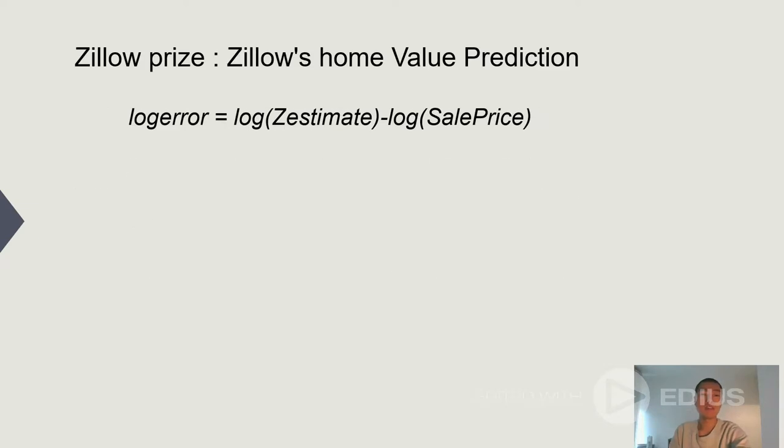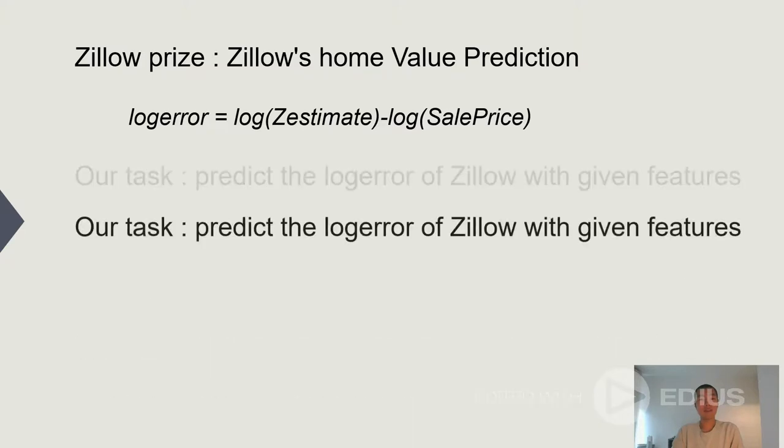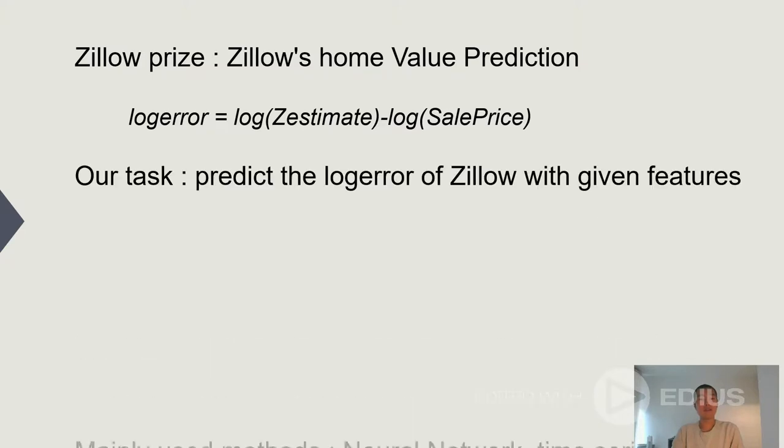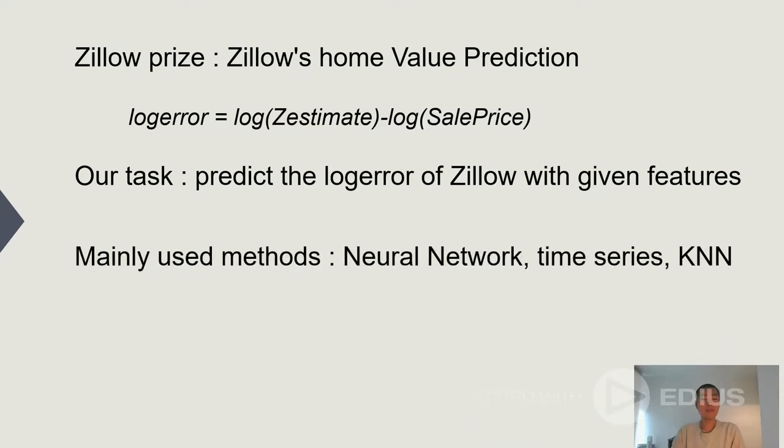This project is innovated by the Zelo price. The goal is to predict the log error. The log error of the prediction is defined by this formula: it is the subtraction of the log Z-Estimate and the log of real sold price. Our mainly used methods are neural network, time series, and KNN.